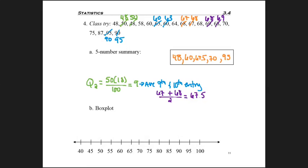Q2, which is also the median, means 50% of the numbers are below 67.5, and 50% of the numbers are above that. And that is true.